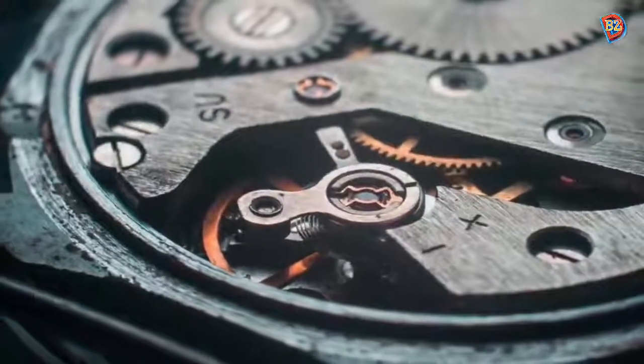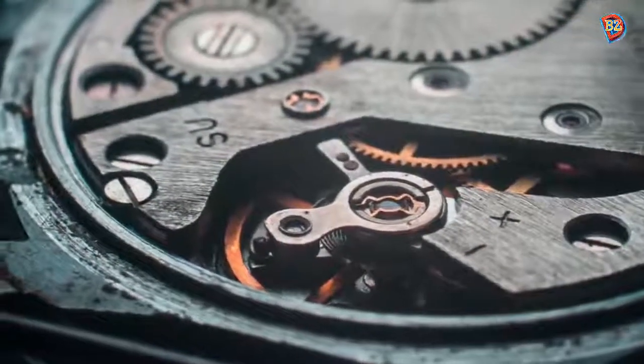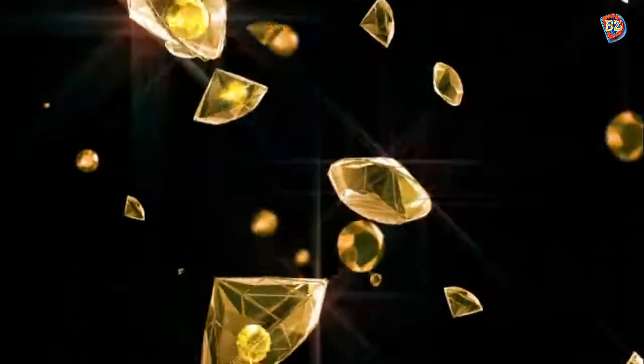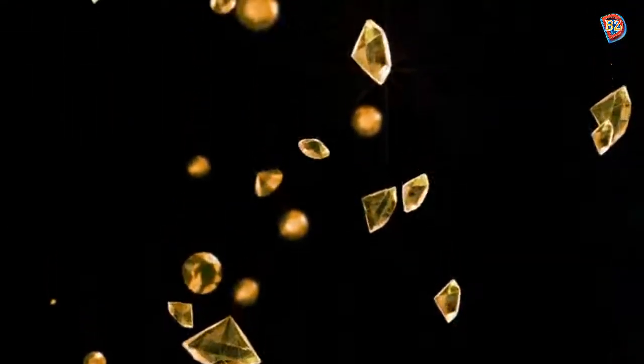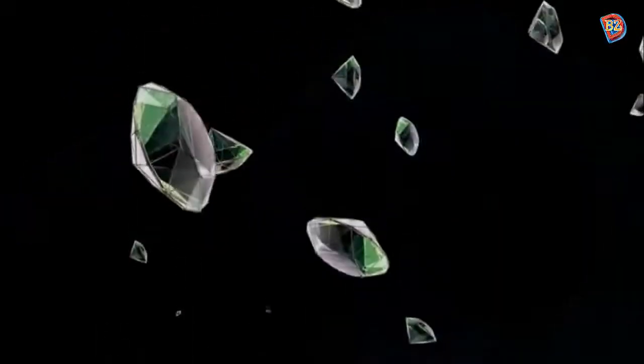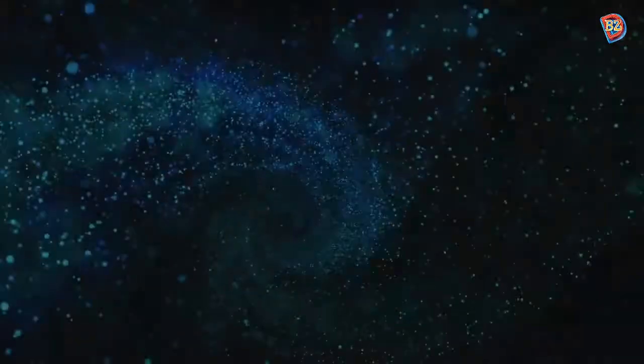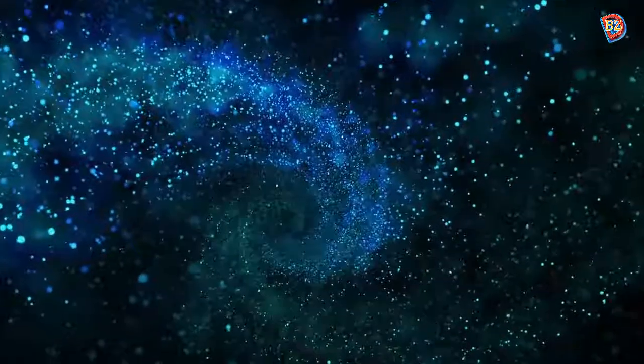Taking anywhere between 1 and 3.3 billion years to form, diamonds are one of the most rare and coveted gemstones in our society. They have been sold for up to millions of dollars depending on quality. Diamonds may be very rare on Earth, but astronomers believe that they are very common in the universe.